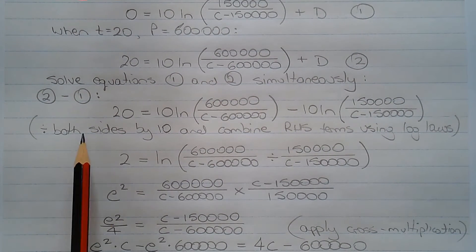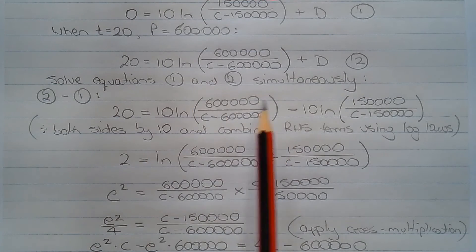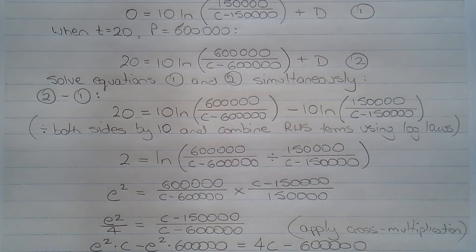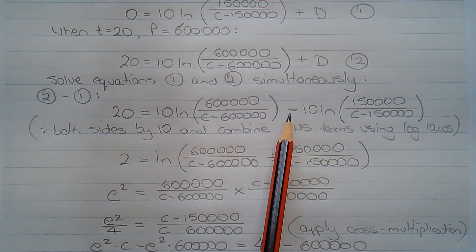We can divide both sides of the equation by 10 and combine the right hand side terms using log laws. We get 2 equals ln of 600,000 over (c minus 600,000) divided by 150,000 over (c minus 150,000), since the two terms involving logs are being subtracted.